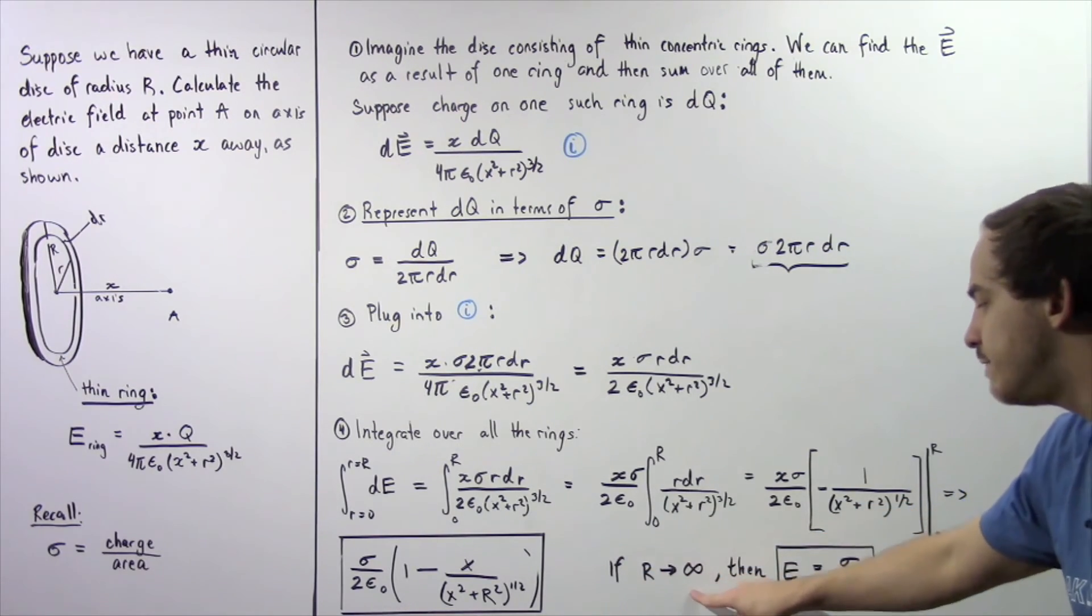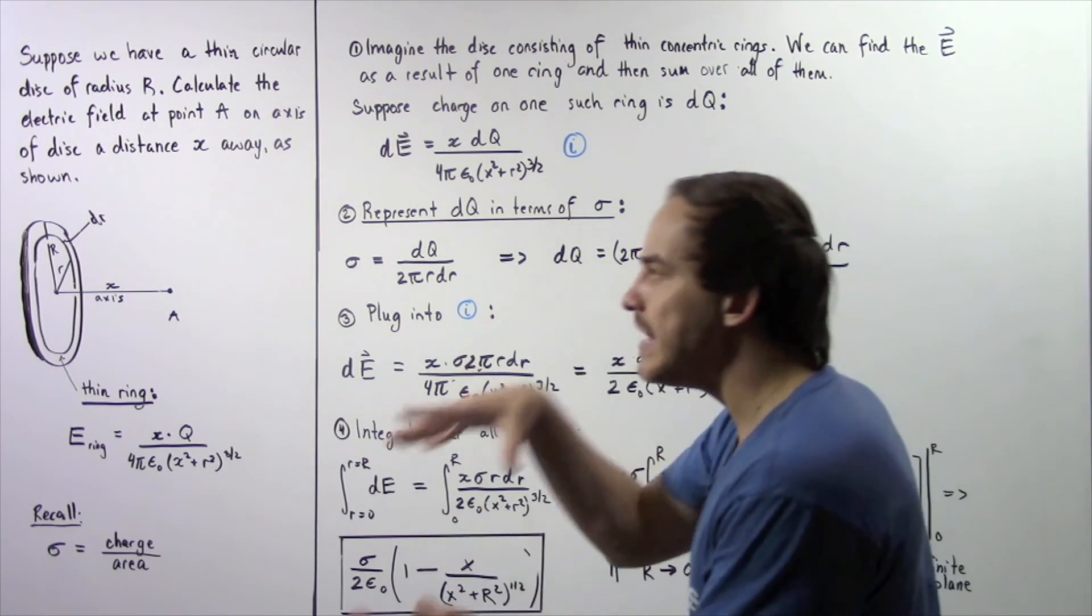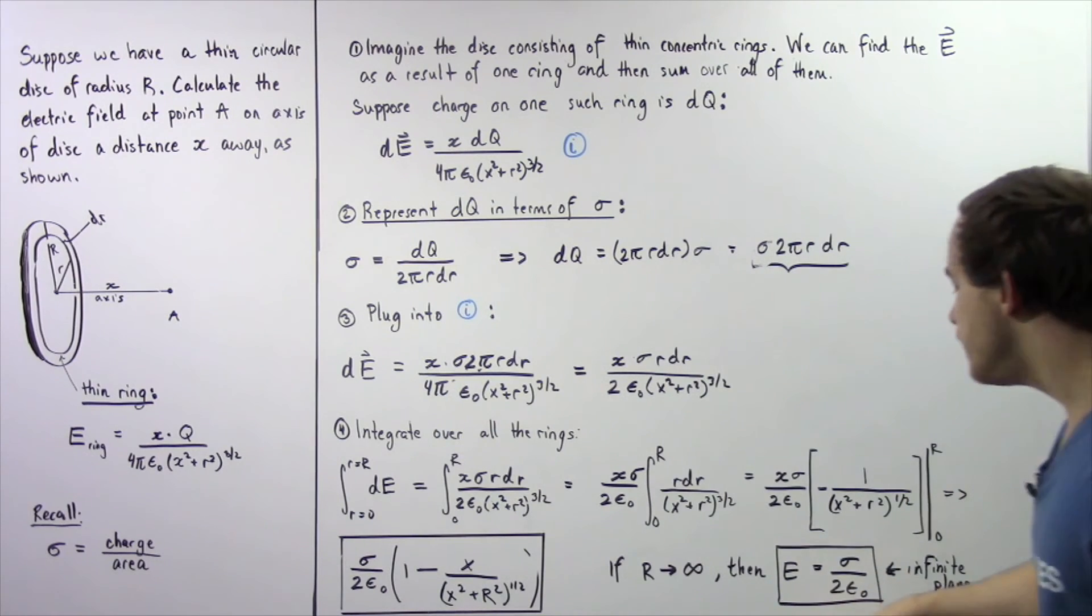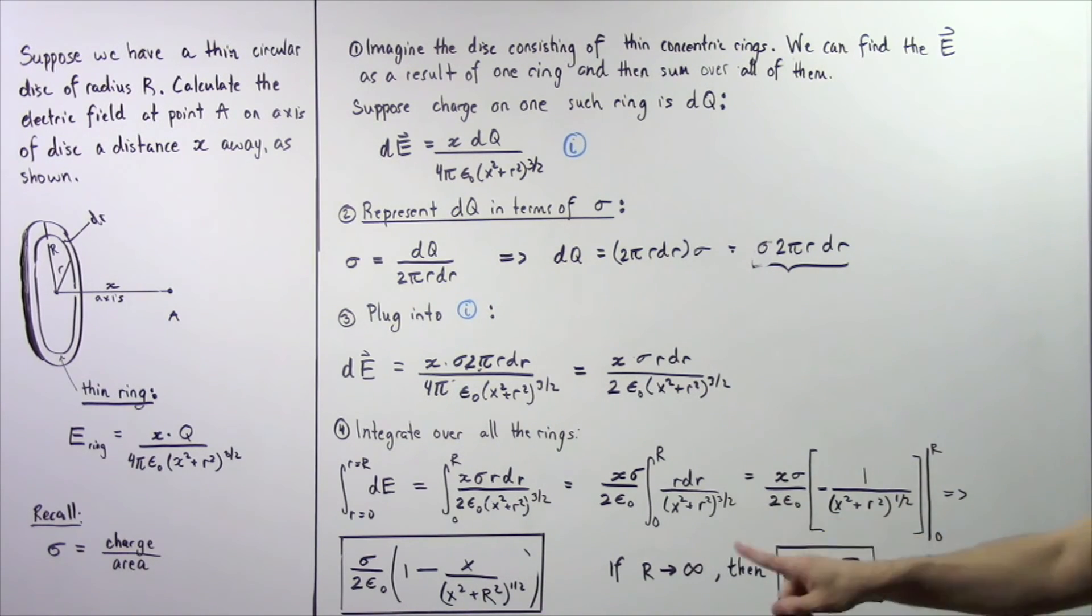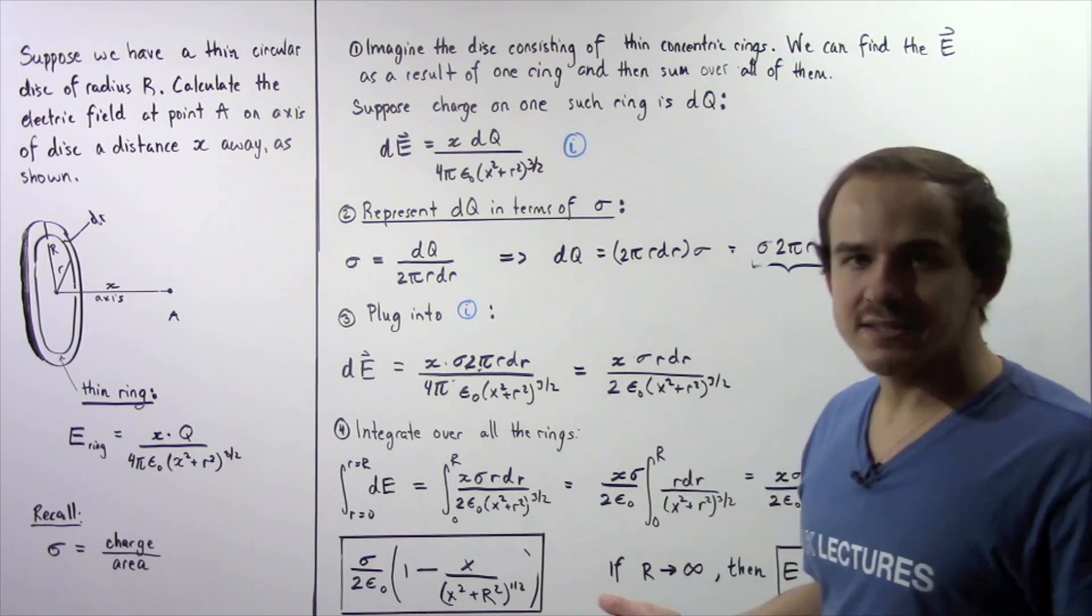So if our R goes to infinity, we have an infinite plane. And that means the electric field of an infinite plane is equal to sigma divided by 2 multiplied by epsilon naught. So this is the electric field due to an infinite plane. And notice that it remains constant because our sigma and epsilon are both constants.